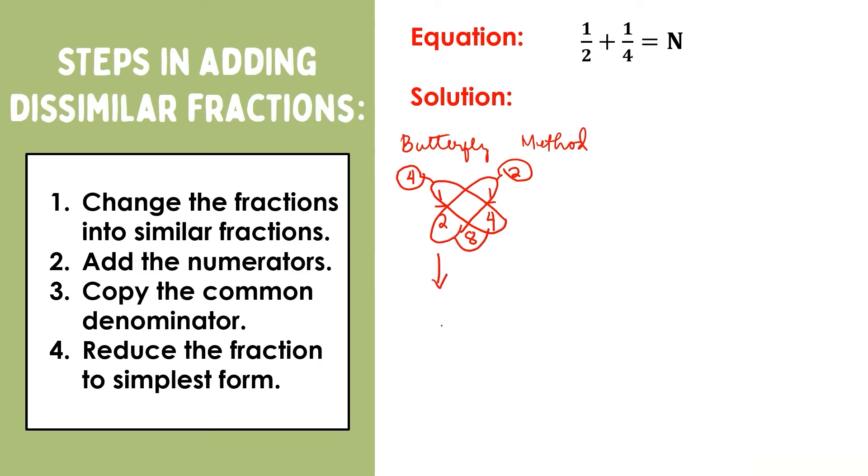That means we can already add. The numbers in the antenna are the new numerators, and the number at the bottom is now the common denominator. So we have 4 + 2 = 6. Then copy the common denominator. Now we have 6/8.